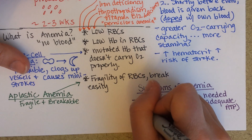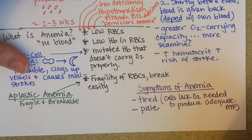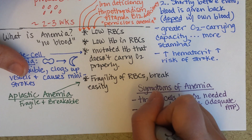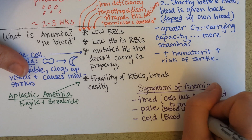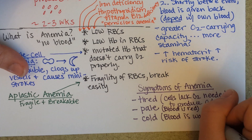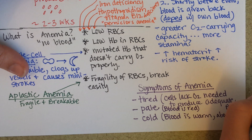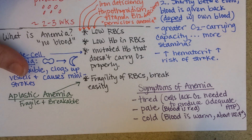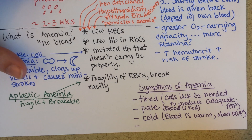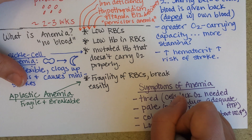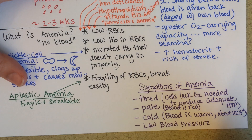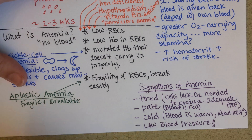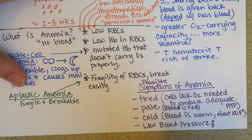The person might be pale because they don't have enough red blood cells — blood is red, so they physically look paler. They might feel cold because blood is warm, actually warmer than the rest of your body at about 100.4 degrees as opposed to 98, so it warms you. If they were quite anemic, you might also see low blood pressure. These are all possible symptoms and may not all appear together.